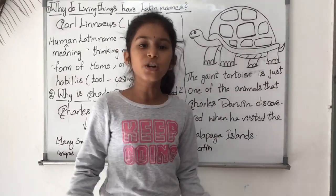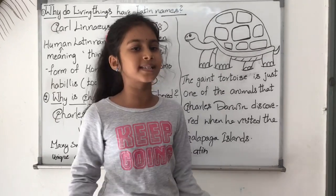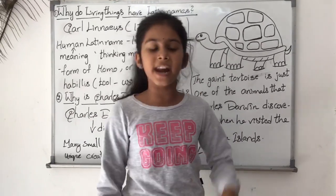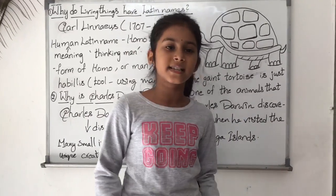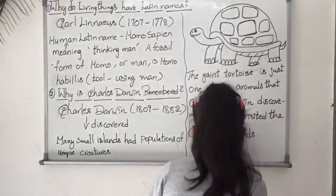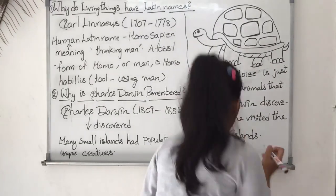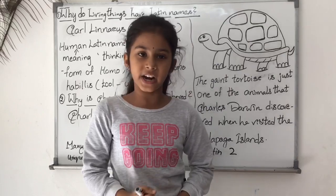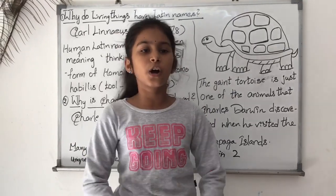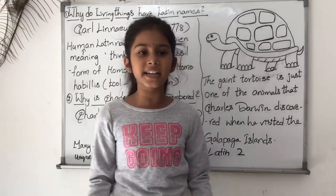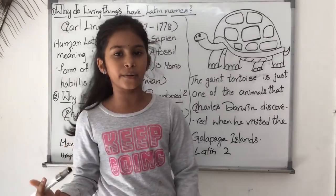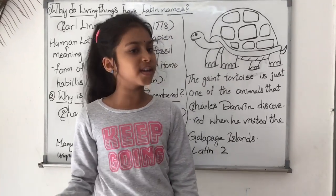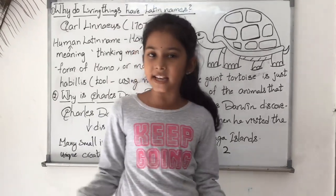Carl Linnaeus was the man who established the scientific method for naming plants and animals. Scientific names are in two parts. The first part is the generic name, which describes a group of related living things. The second part is the specific name, which applies to only that living thing.